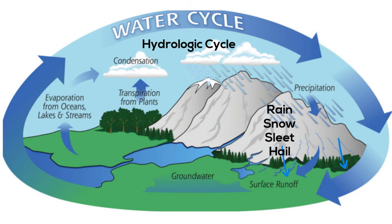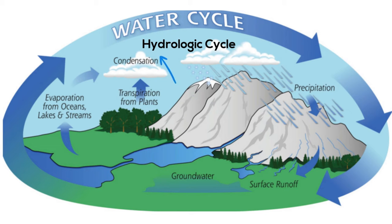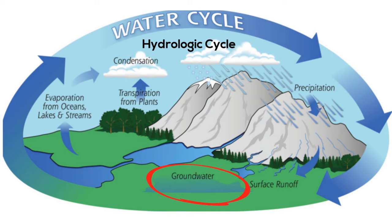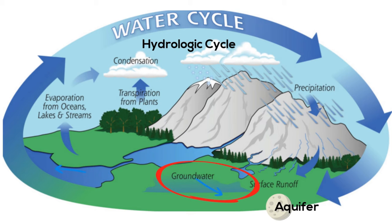Precipitation may take the form of rain, snow, sleet, and hail. Once this water reaches the ground, one of two processes may occur: some of the water may evaporate back into the atmosphere, or the water may penetrate the surface and become groundwater.